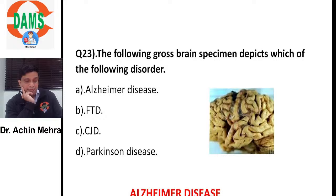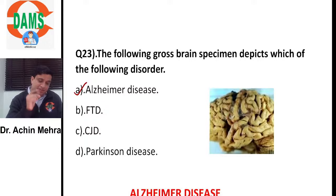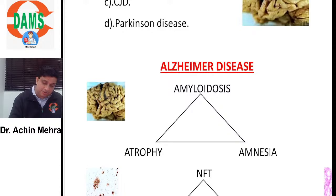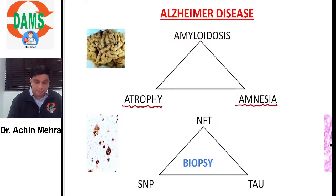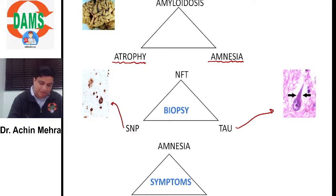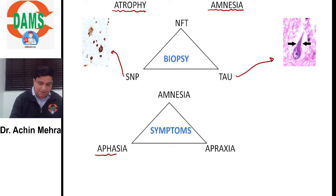The gross brain specimen shows an atrophied brain with wider, deeper sulci and prominent gyri — this is Alzheimer's disease. Quick recap: Alzheimer's is an amyloidosis process causing brain atrophy and memory loss. Biopsy shows neurofibrillary tangles with tau proteins and senile neuritic plaques. Symptoms include anterograde amnesia initially, anomic aphasia, and apraxia — inability to perform skillful tasks.